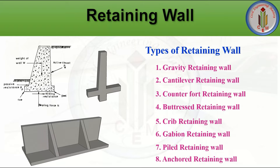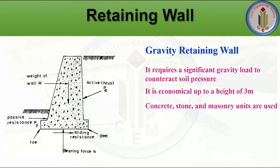The major types of retaining walls are: gravity retaining wall, cantilever retaining wall, counter foot retaining wall, buttressed retaining wall, crib retaining wall, gabion retaining wall, piled retaining wall, and anchored retaining wall. Let's look into each type and its functions.